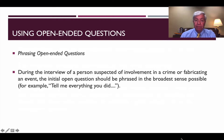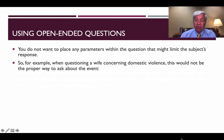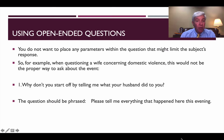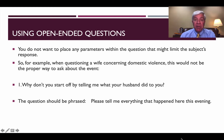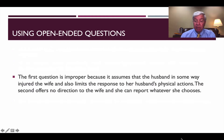Phrasing the open-ended question. During the interview of a person suspected of involvement in a crime or perhaps fabricating an event, the initial open question should be phrased in the broadest sense possible — for example, 'Tell me everything you did.' You do not want to place any parameters within the question that might limit the subject's response. So, for example, in a domestic violence case when interviewing the wife, it would be improper to say, 'Why don't you start off by telling me what your husband did to you.' The question should be phrased, 'Please tell me everything that happened here this evening.' The first question is improper because it assumes that the husband in some way injured the wife and also may limit her response to her husband's physical actions.